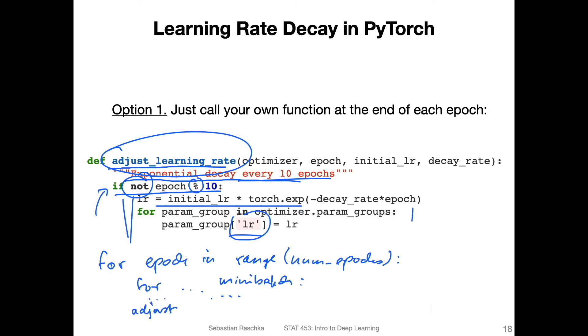So you would put it essentially here, adjust_learning_rate. You would put essentially the function here, adjust_learning_rate, with the optimizer as input, the epoch number, the initial learning rate and the decay rate, and then it will update every 10th epoch.